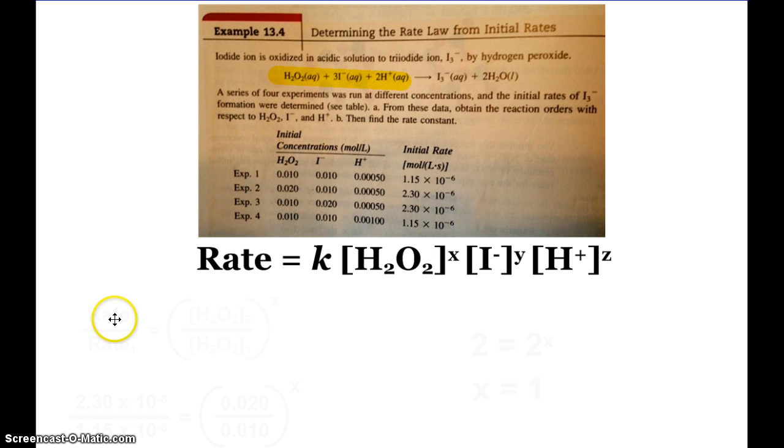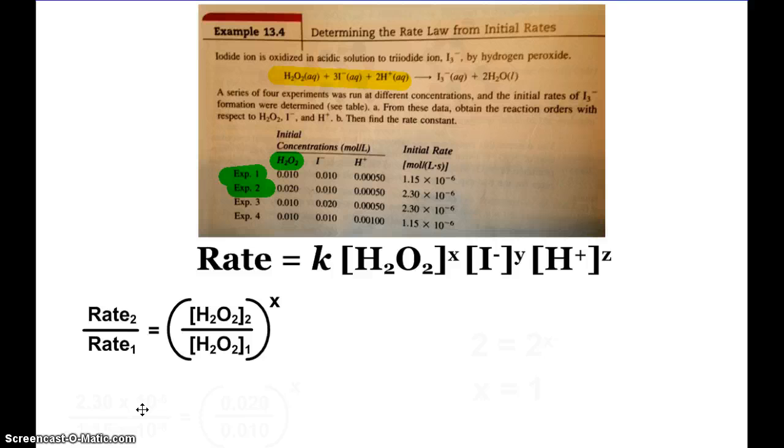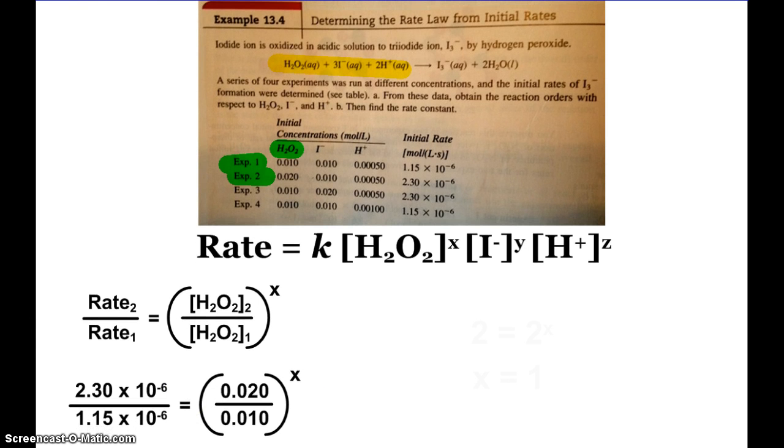I can compare two of the experiments, and I can do this with each of the different reactants. You can see experiment one and experiment two. When I look at those two experiments, the hydrogen peroxide concentration was changed. The iodine and hydrogen ion were kept the same, so I can use those two experiments to figure out X. When I compare the rates and the concentrations, I can figure out X. Rate 2 over rate 1 equals the concentration of hydrogen peroxide from 2 over the concentration of hydrogen peroxide from 1 raised to the X power. When I plug in my data and do my calculations, I find that 2 equals 2 to the X, so of course X equals 1.